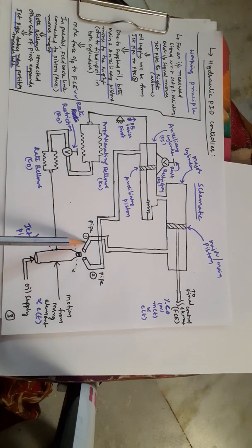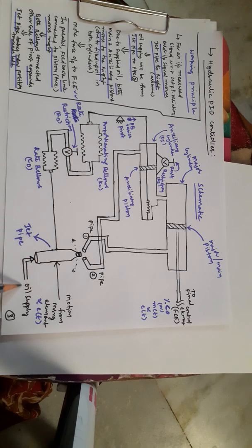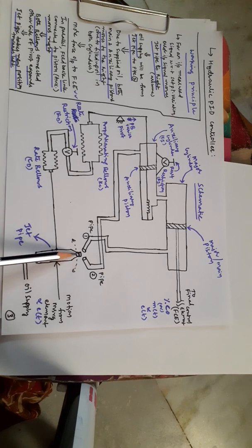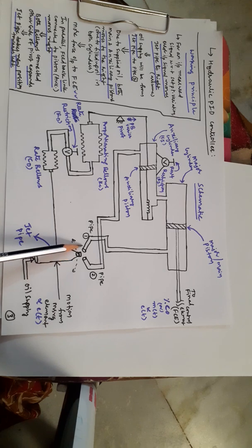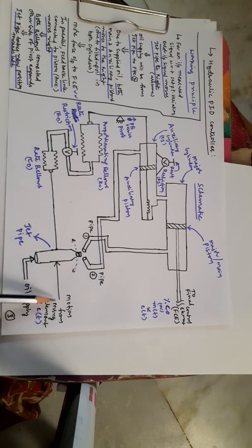The auxiliary piston is connected to pipe 2 and the main piston is connected to pipe 1. Pipe 1 is connected to the main cylinder; pipe 2 is connected to the auxiliary cylinder. We also have a jet pipe — the hydraulic fluid used is oil. The oil supply is sent through this jet pipe. When the jet pipe moves to the left it connects to pipe 1; when it moves to the right it connects to pipe 2.